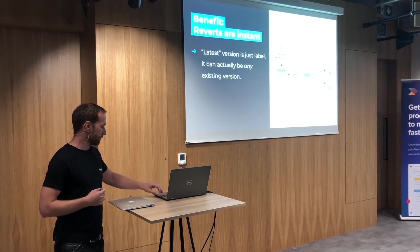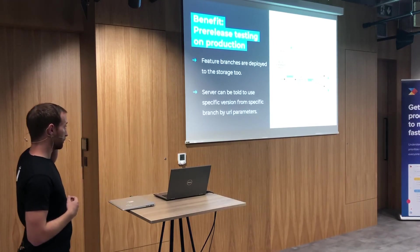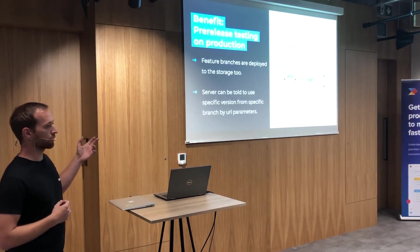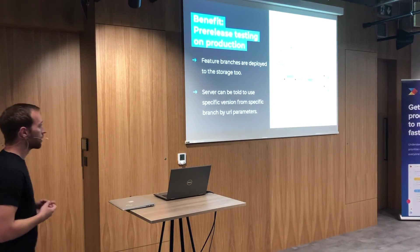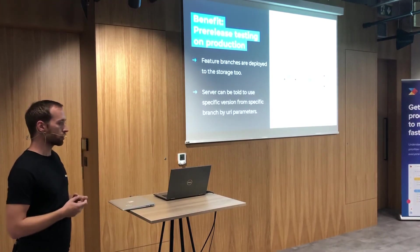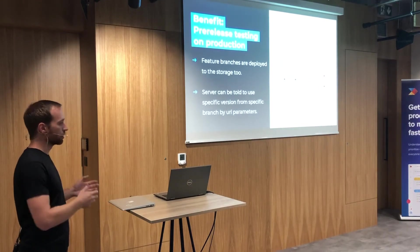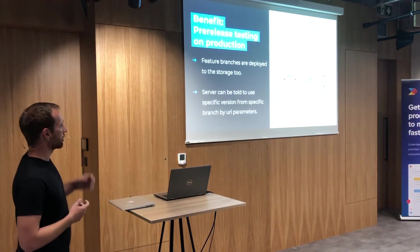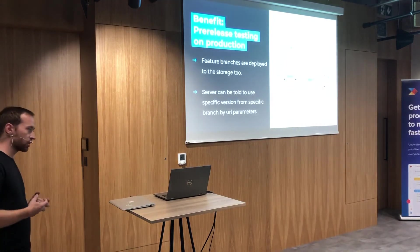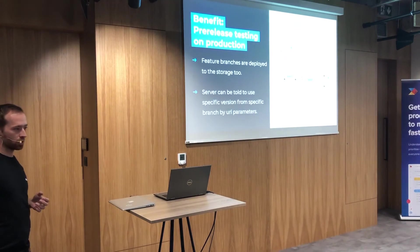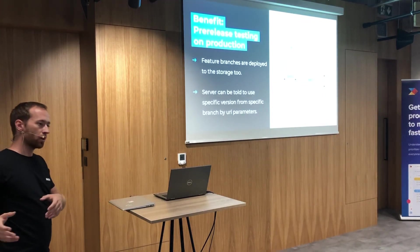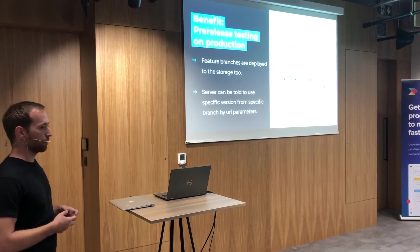Another thing we realized much later: instead of always querying the latest version, we can tell the server to use a specific version. For every feature branch we build, we create a preview build that can be used by testers to verify before we merge to production. But we can actually do something better — we can take this preview version in Azure Storage, pass that version to the server, and tell it to use the production data of a real customer with this preview version. Then we send that link to them and they can test the preview version even before it gets to production.